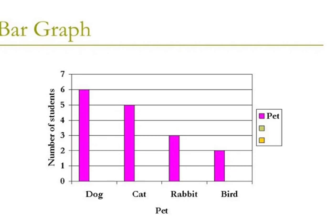Here is the correct graph that represents the number of students who like dog will be 6, number of students who like cat is 5, then rabbit is 3 and bird is 2.